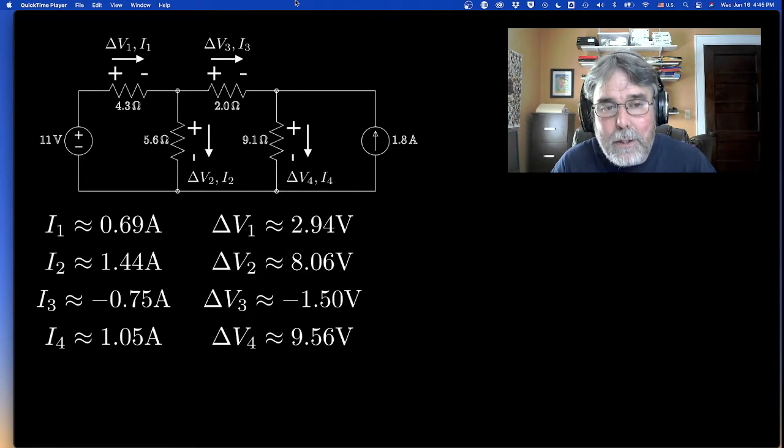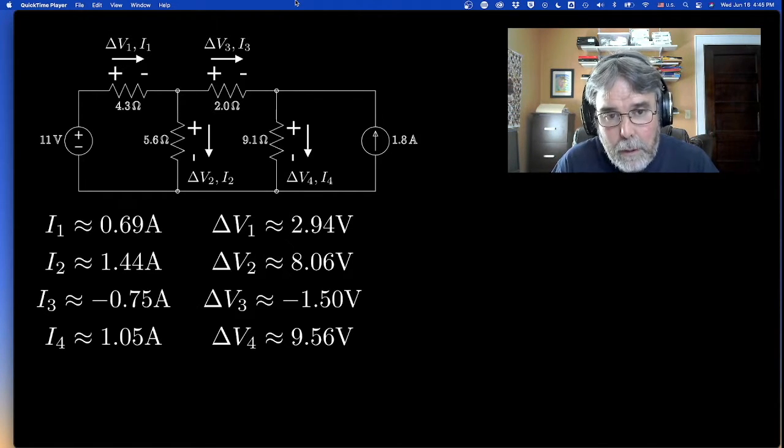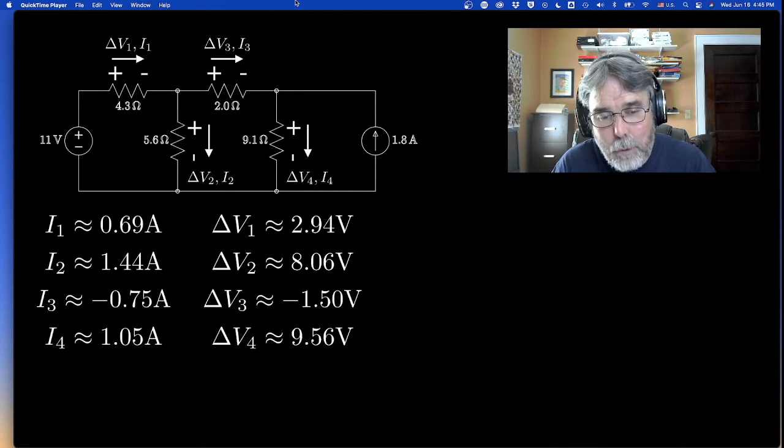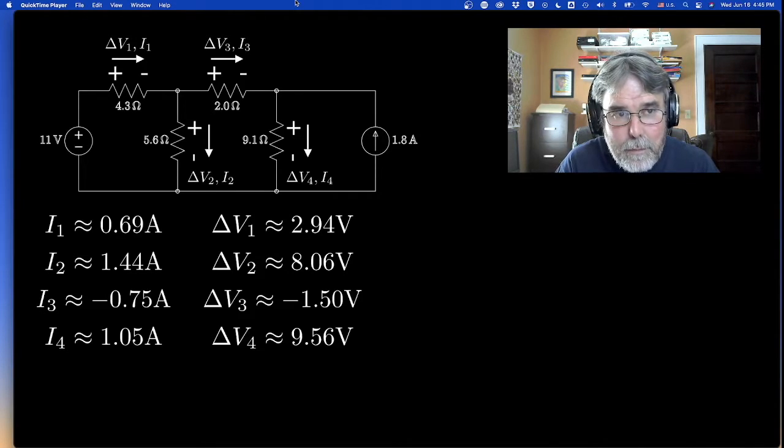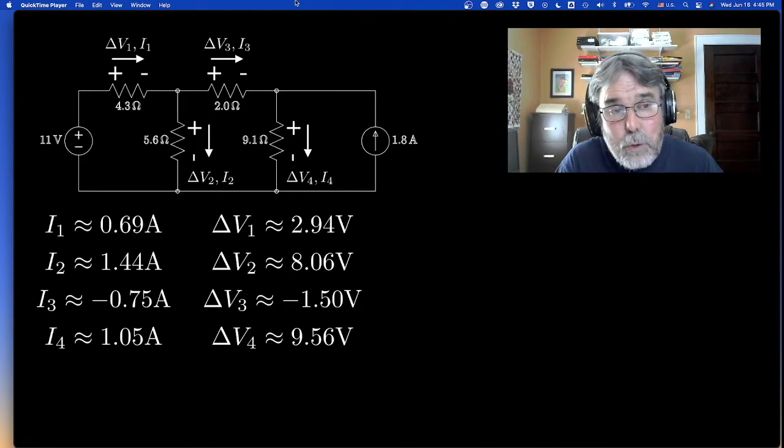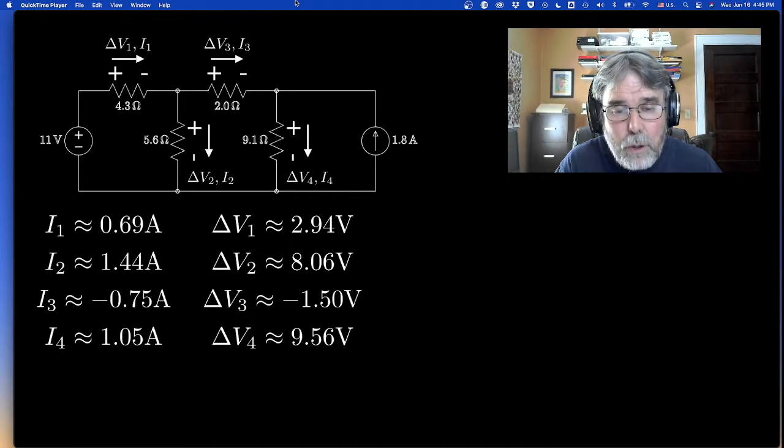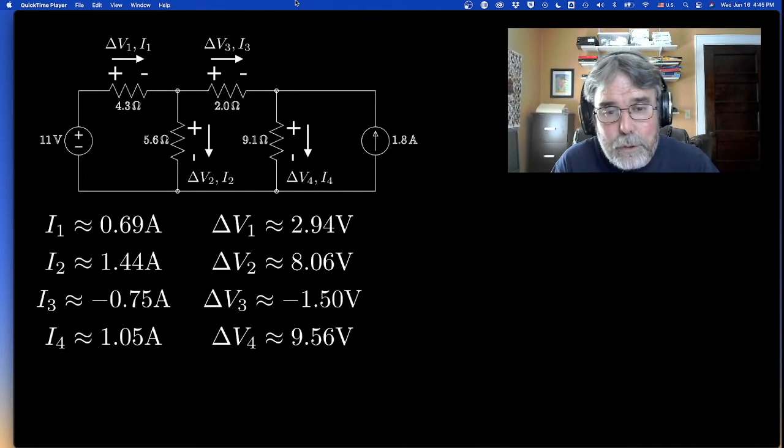What I want to talk about now is energy. Now remember the definition of electric potential, the definition of voltage, is energy per unit charge. So that means if you've got a 2.94 volt drop, voltage drop, across that 4.3 ohm resistor, that when a charge, when one coulomb of charge flows from the plus end to the minus end, it's losing 2.94 joules of energy, 2.94 joules per coulomb of charge. That's what 2.94 volts means.